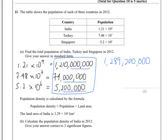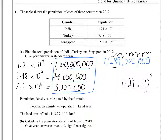Now in standard form the first number has to be less than 10. We can have up to two decimal places. Because the next digit is greater than or equal to 5 we round up, so we end up with 1.29 times 10 to the 9.